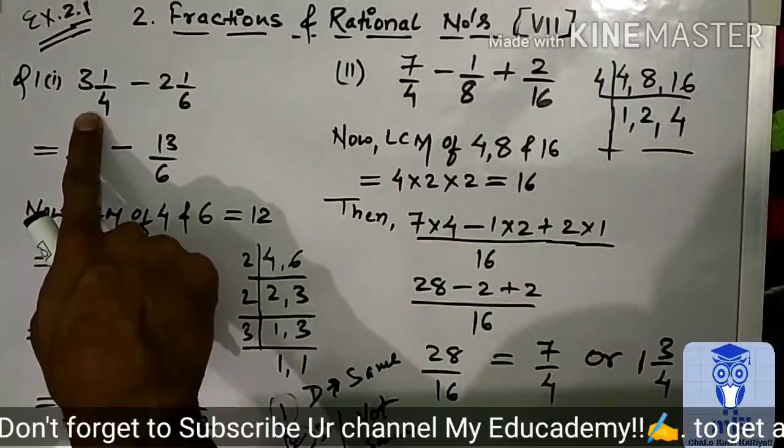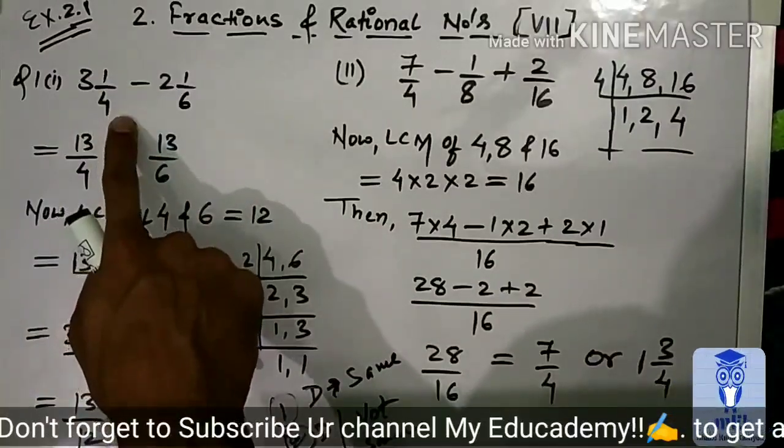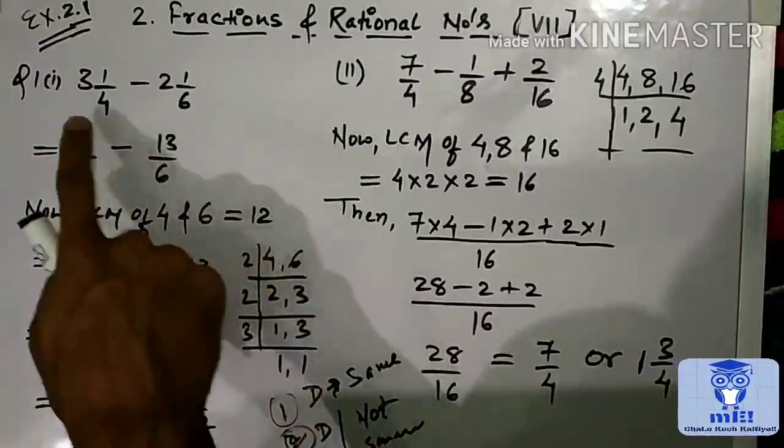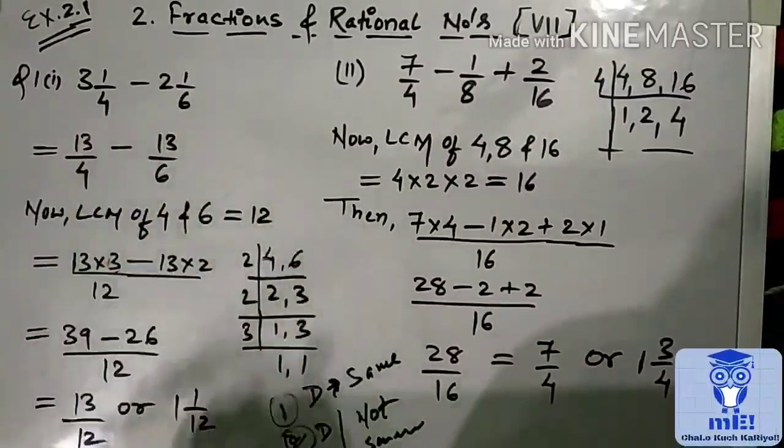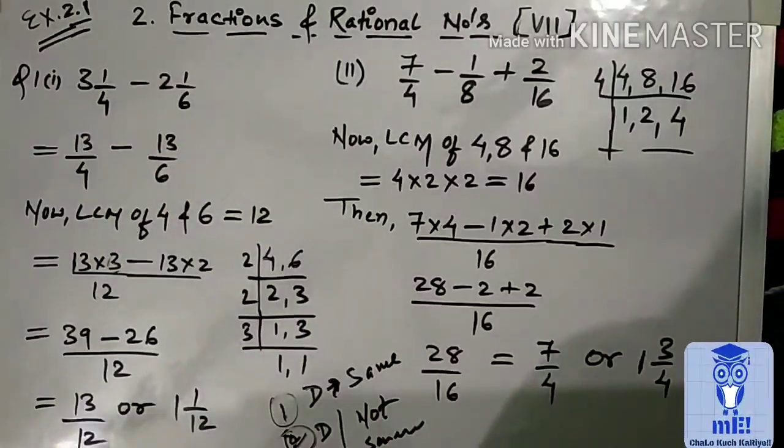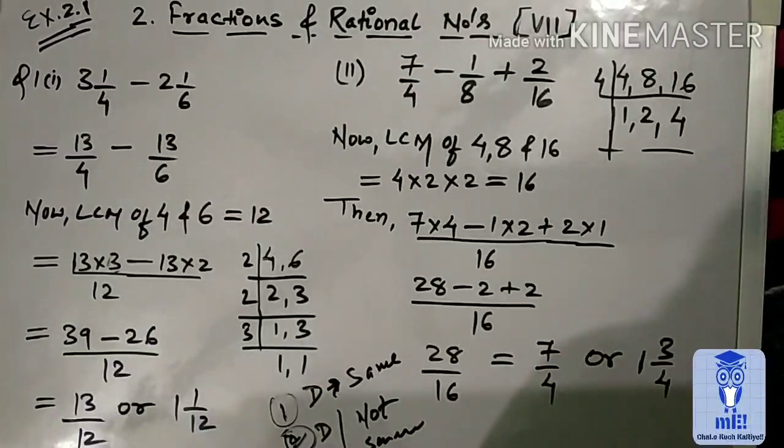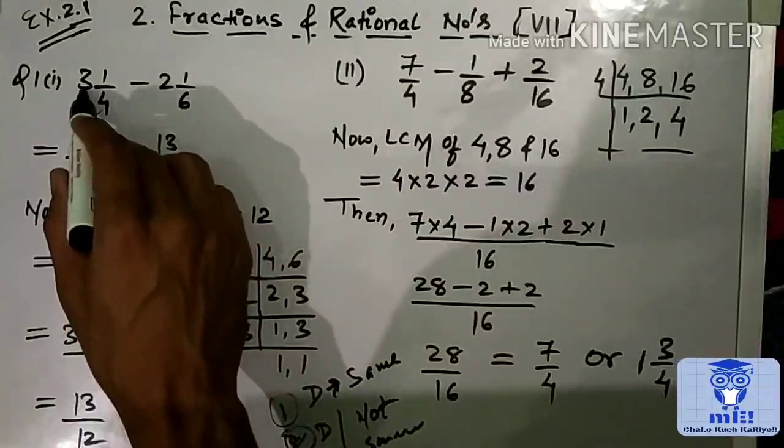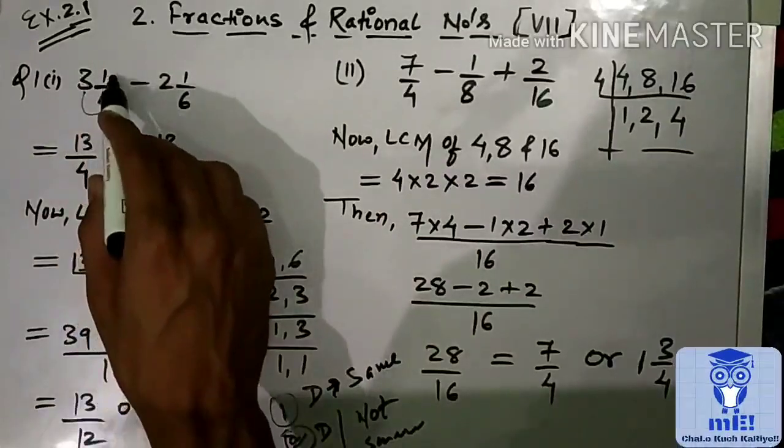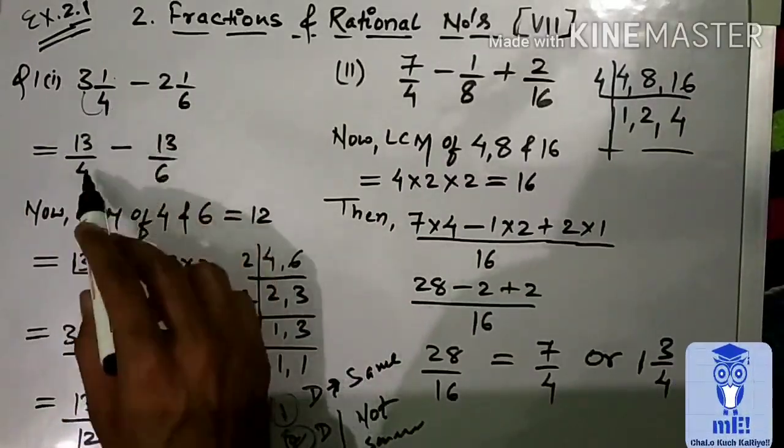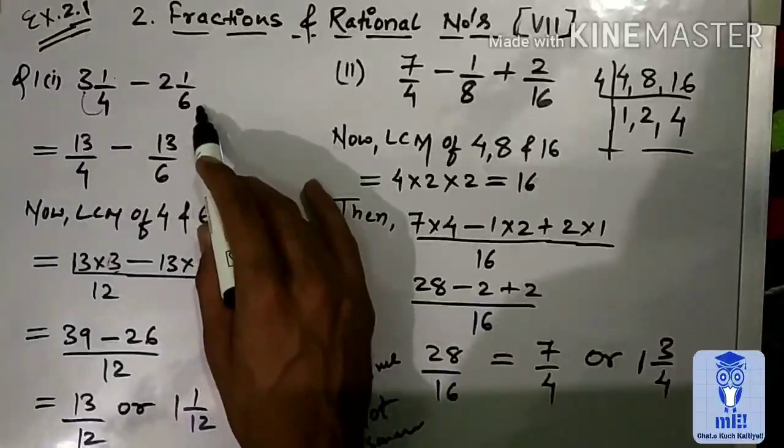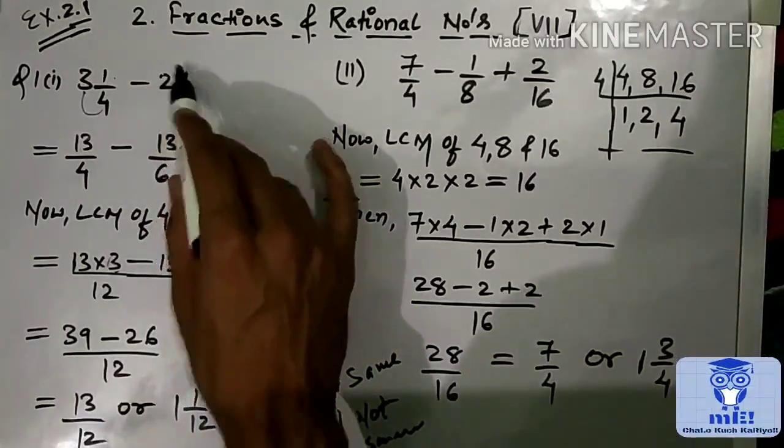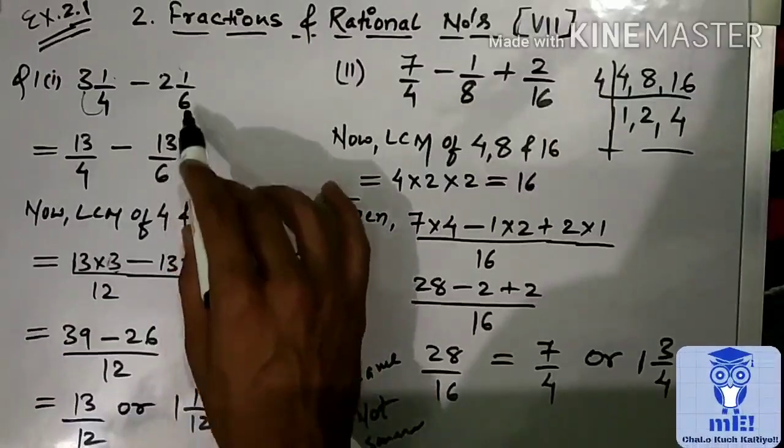This is given in mixed fraction. 3 1/4 minus 2 1/6. Both are given in mixed fraction. So, first, we have to convert this into improper fraction. What we do? 4 into 3, 12. 12 plus 1, 13. 13 by 4. Again, come to the next second number. 6 into 2, 12. 12 plus 1, 13. 13 by 6.